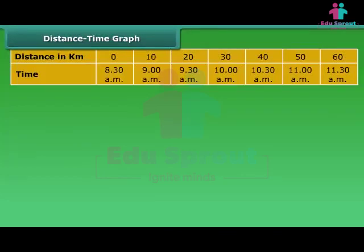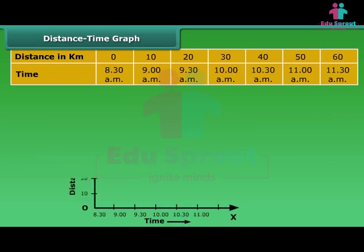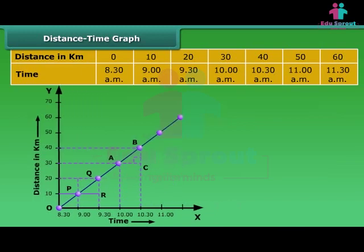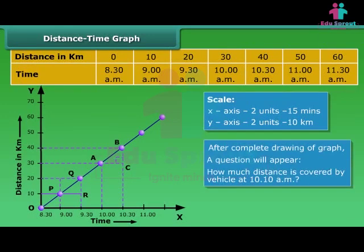Motion of objects can be presented in pictorial form with the help of distance time graph. For this purpose, first draw a horizontal line to represent the x-axis and a vertical line to represent the y-axis and mark them as OX and OY. Measure time along the x-axis and distance along the y-axis. Mark values for the time and the distance on the respective axes. Now plot the points on the graph paper, each point representing a specific combination of distance and time values.